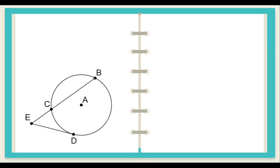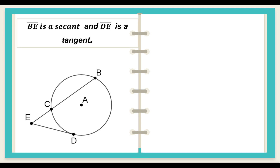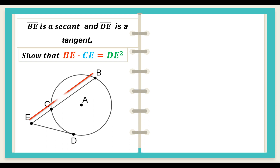We make use of this figure to prove the theorem. Segment BE is a secant and segment DE is a tangent. What are we supposed to show? We have to show that segment BE multiplied by segment CE is equal to segment DE squared — BE as the secant, CE as the outer segment of the secant, and DE is the tangent.